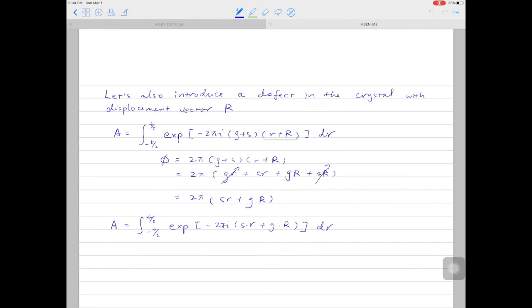To wrap up, there are two scenarios we can apply the kinematical approximation. The first case is when the sample is extremely thin and the electrons are only scattered once by the lattice planes. The second case is when we set the excitation error large enough, just like in the case of the weak beam dark field imaging. In the next video, we'll have a closer look at the weak beam technique, and learn how to use this technique to illuminate dislocations in crystalline materials.